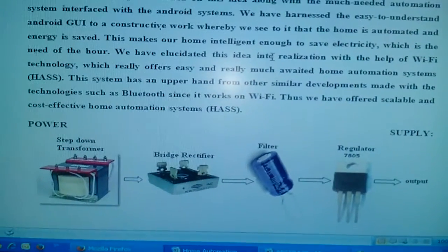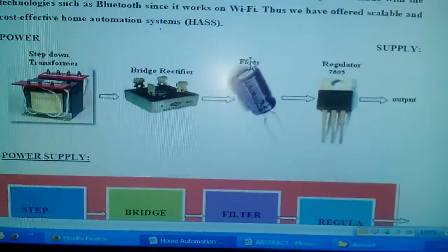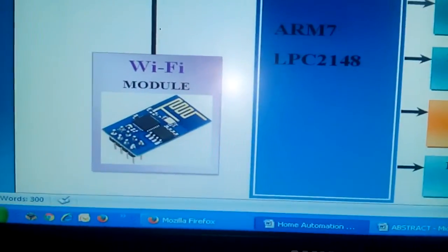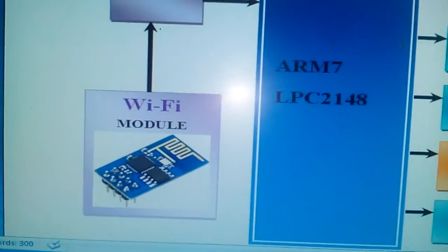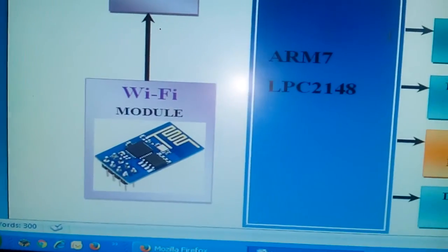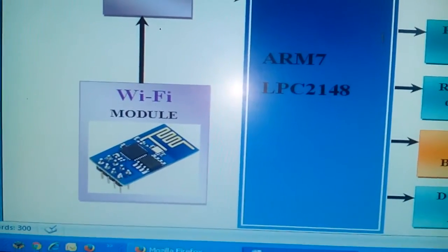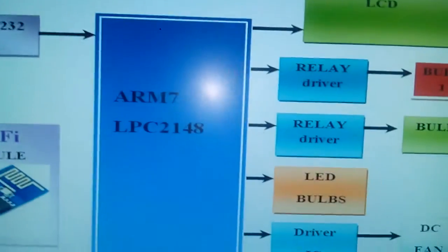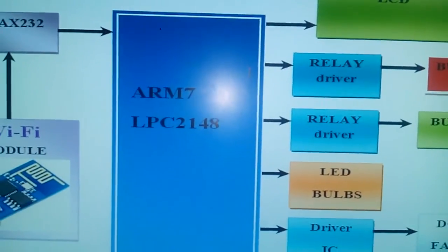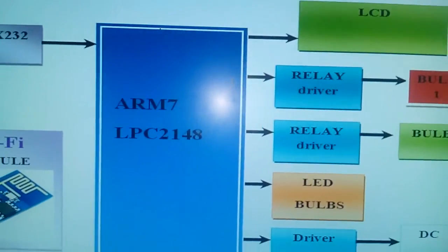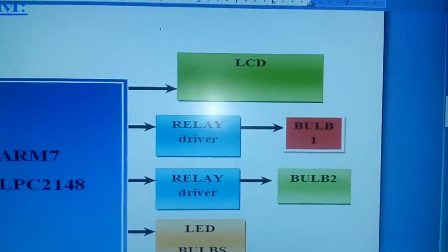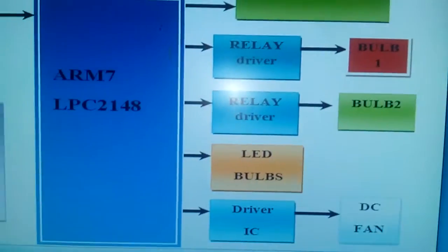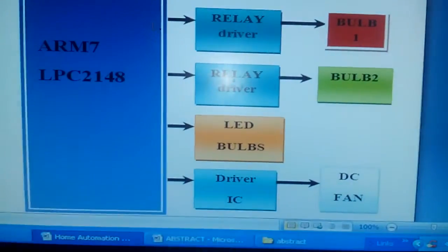For the power source I am using a transformer with rectifier, filter capacitor, and a 7805 regulator. I am using an ESP8266 Wi-Fi module, which is a UART Wi-Fi module with a baud rate of 115200. I am also using an ARM7 LPC2148 32-bit microcontroller and a 16x2 character LCD display, two relay coils, bulb 1 and bulb 2.